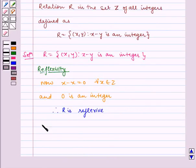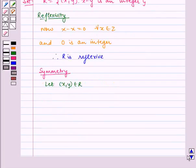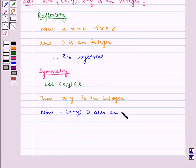Let's check the symmetric property of the relation. Let (x,y) belongs to R. Then x minus y is an integer. Now, minus of (x minus y) is also an integer. That is, y minus x is an integer.